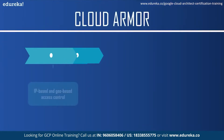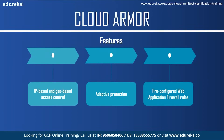The first feature of Google Cloud Armor is IP-based and geo-based access control. You can filter incoming traffic based on IPv4 and IPv6 addresses or CIDRs, and enforce geographic-based access control using Google geo IP mapping. The next feature is adaptive protection — Cloud Armor automatically detects and helps mitigate high-volume DDoS attacks with a machine learning system trained locally on your applications. The last feature is pre-configured web application firewall rules based on industry standards to reduce common web vulnerabilities.